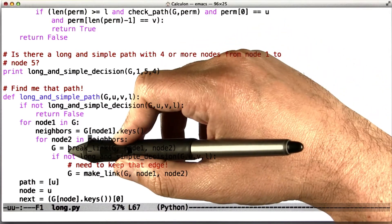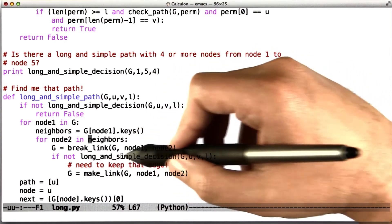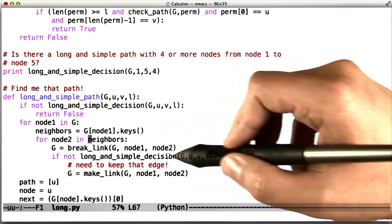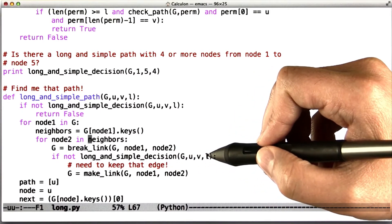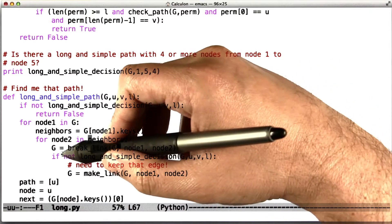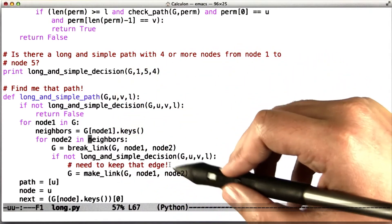And now we ask, is it the case that there's still a long and simple decision, a long and simple path? We ask for the decision, is there a long and simple path in G from U to V of length L? And if the answer is no, if there's not such a path, then we need to put that edge back in the graph. Otherwise, we just leave it out.